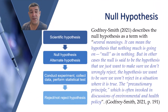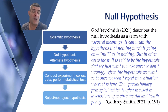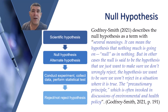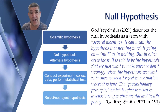What is a null hypothesis? Godfrey Smith described the null hypothesis as a term with several meanings. It can mean the hypothesis that nothing much is going on — null as in nothing. But in other cases, the null is the hypothesis that we just want to make sure we don't wrongly reject — the hypothesis we want to be sure we won't reject in a situation where it is true. This precautionary principle is often invoked in discussions of environmental and health policy. Put simply, the null hypothesis is usually stated in the form 'A does not affect B,' contrasting with the alternative scientific hypothesis that A does affect B. One of the reasons we form null hypotheses is that only the null hypothesis is subject to statistical tests.